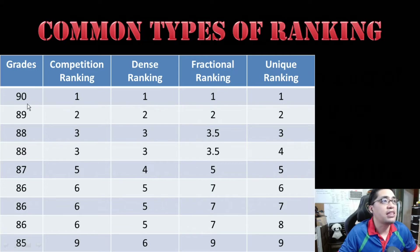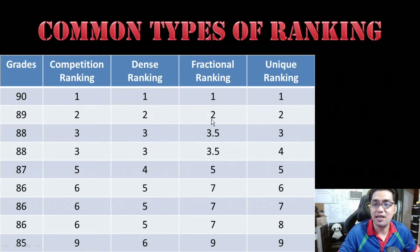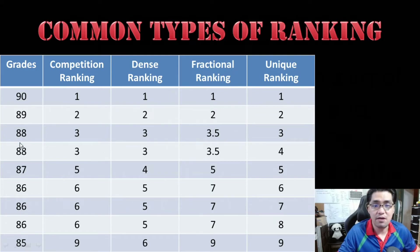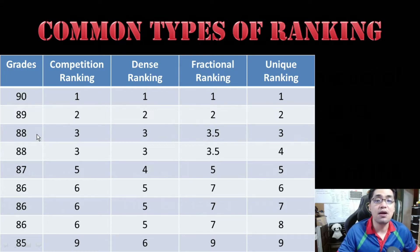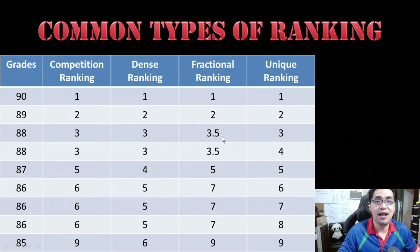For example, 90 is first place and because 90 is unique — it does not have ties — you have 1 as its fractional rank. 89 is also unique, it's second place, so it has 2 as its fractional rank. Now, for the two 88s over here, this is supposed to be third place and this is supposed to be fourth place, but they are tied. So, what you do is: because this is third place you have 3, and this is fourth place you have 4. You take 3 plus 4, which equals 7, then divide by the number of tied elements — 7 divided by 2 is 3.5. So that is how you obtain fractional ranking manually.